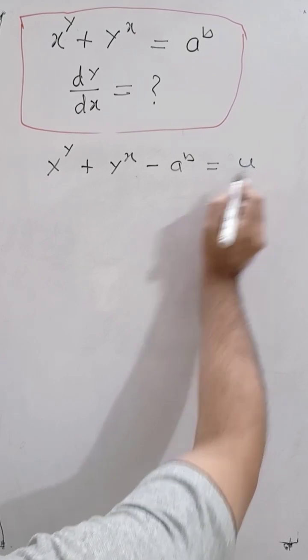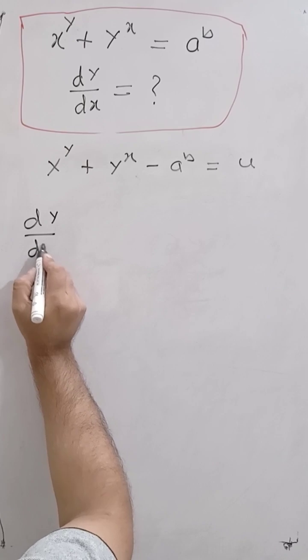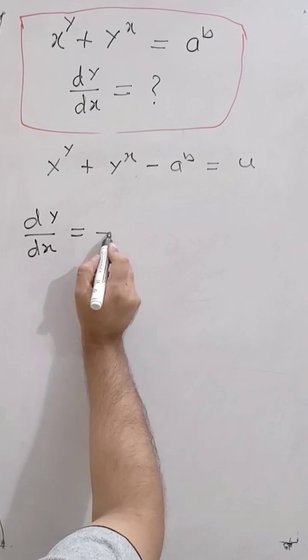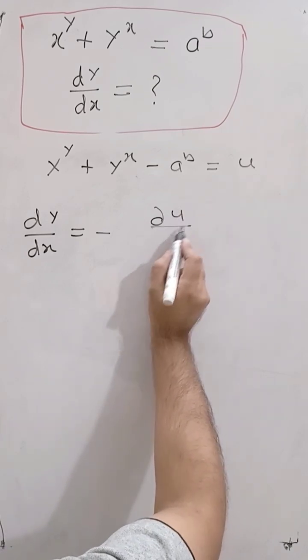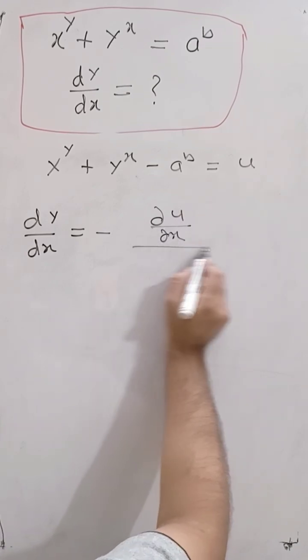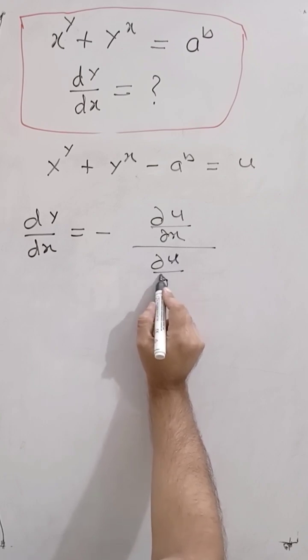And now dy by dx directly is equal to minus del u over del x divided by del u over del y.